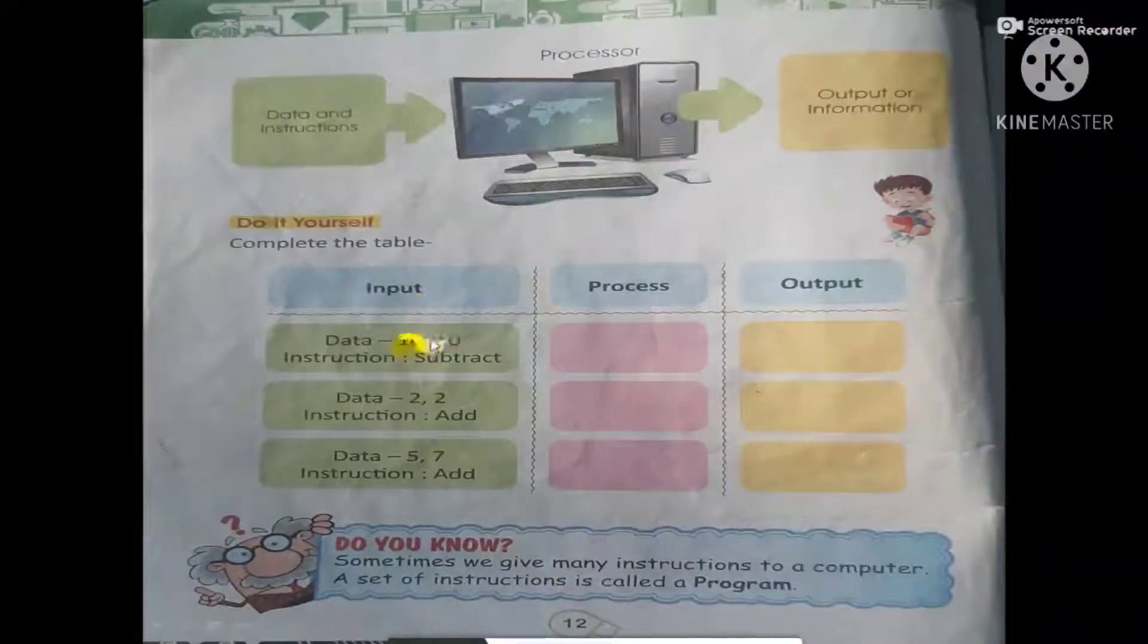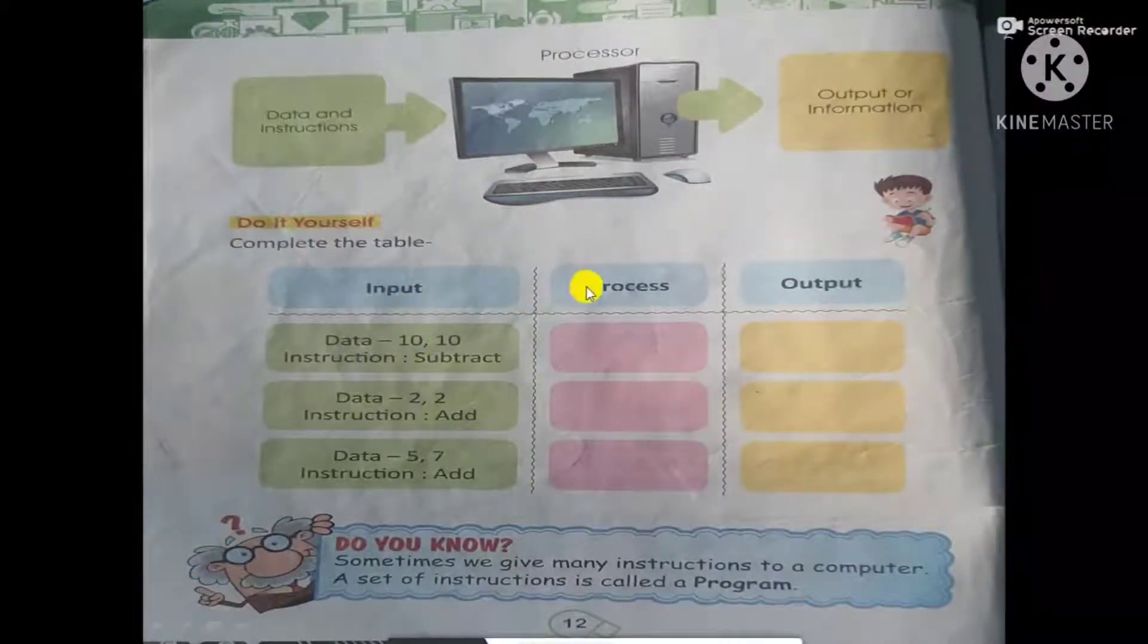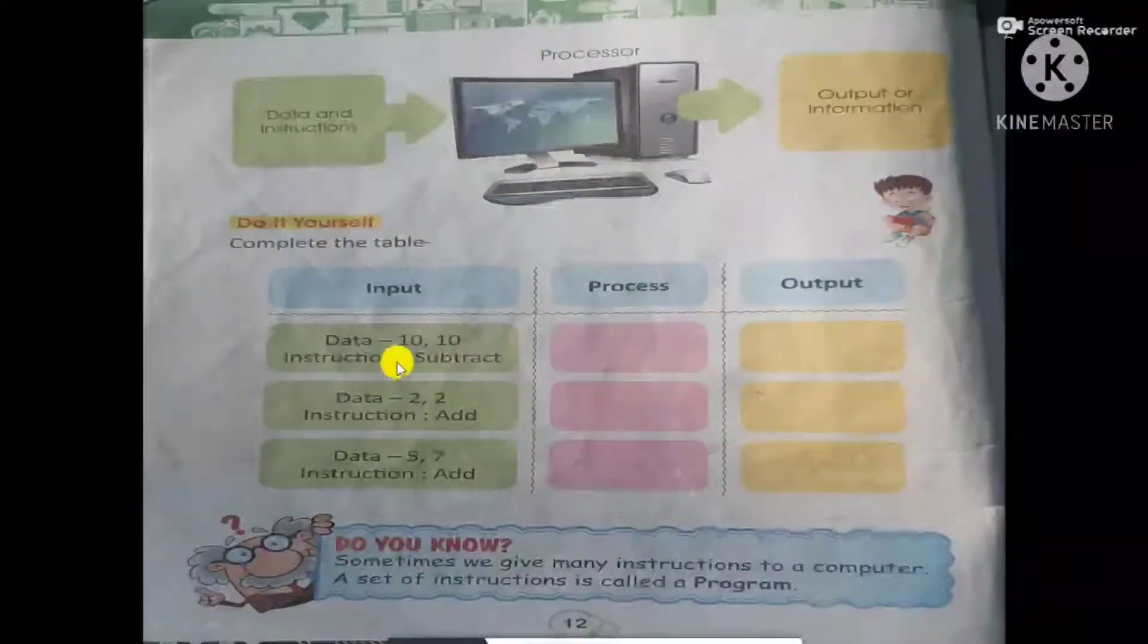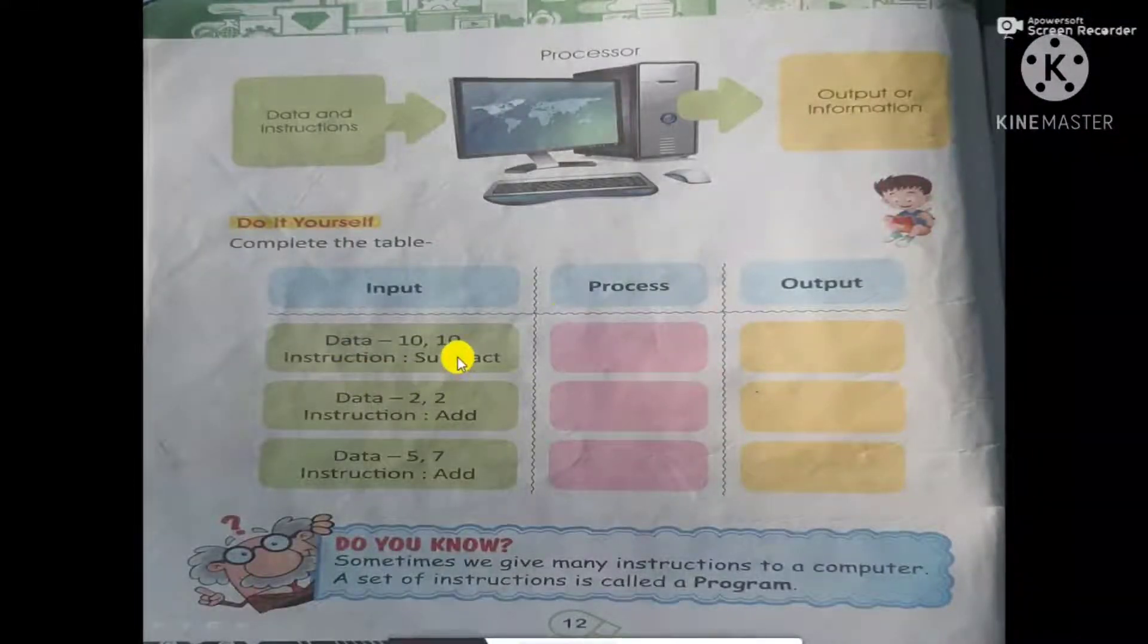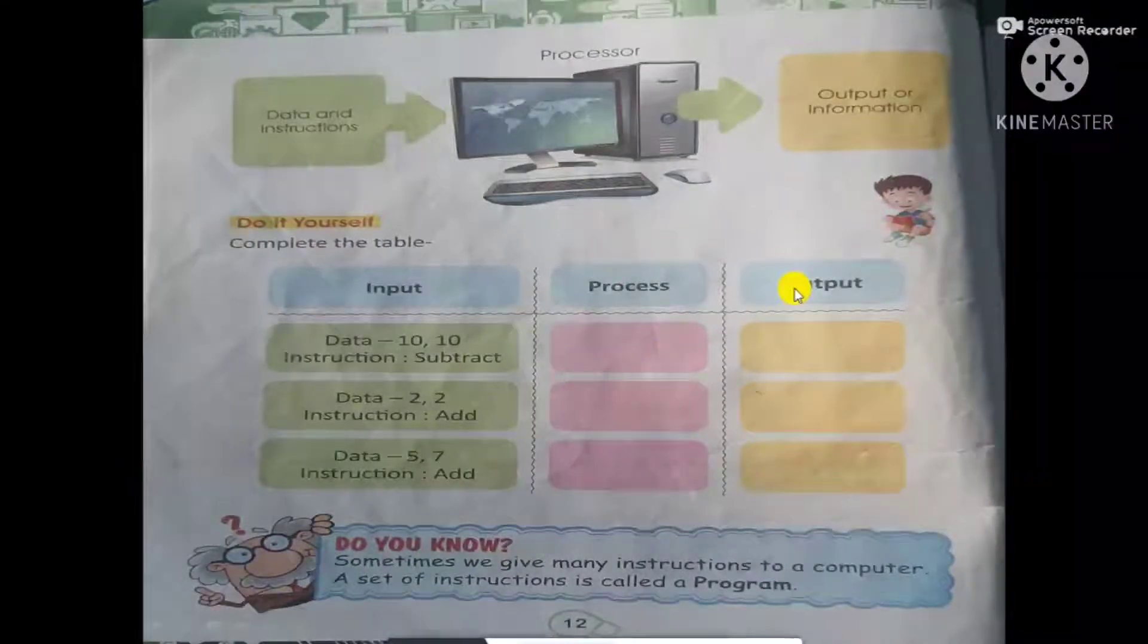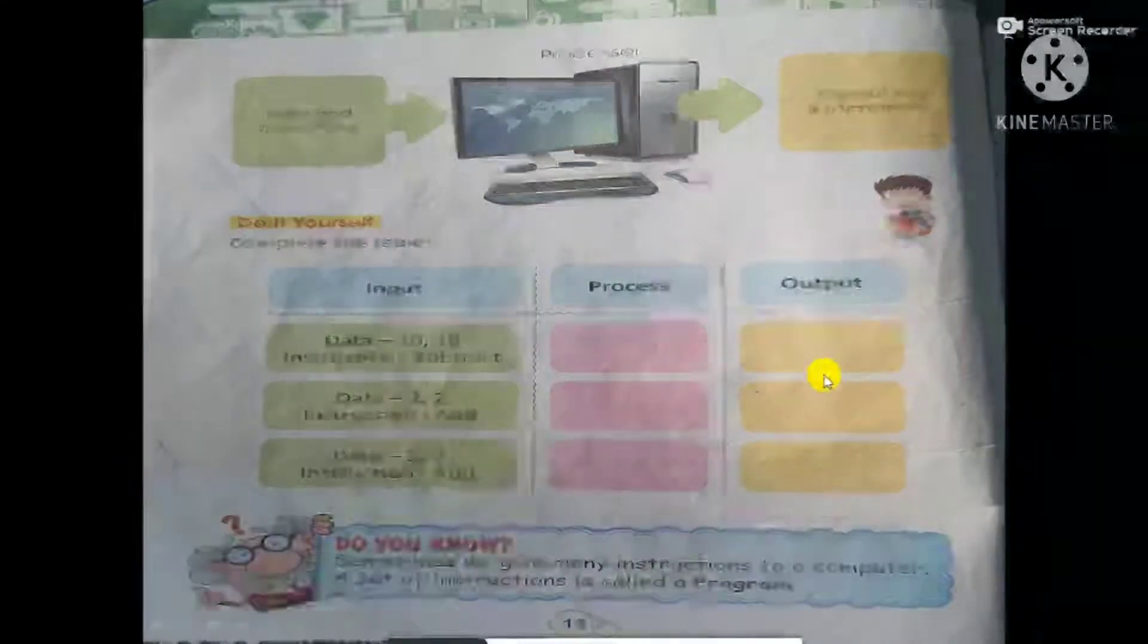Let us understand with example. Input, process, output. Data 10, 10. Instruction is to subtract. So here process will be 10 minus 10. And in the output we will get 0.